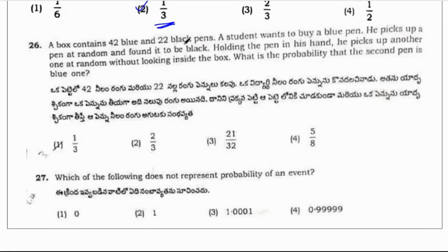A box contains 42 blue and 22 black pens. A student wants to buy a blue pen. He picks up a pen at random and found it to be black. Holding the pen in his hand, he picks up another one at random without looking inside the box. What is the probability that the second pen is blue one? So total pens are 63.